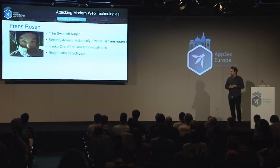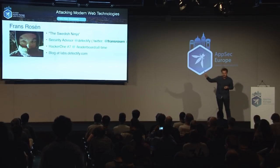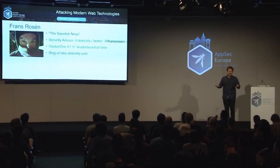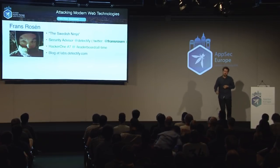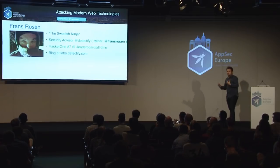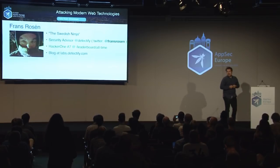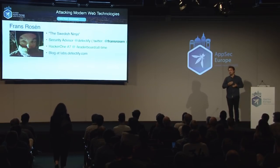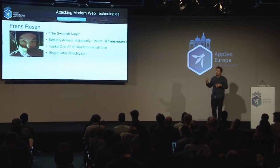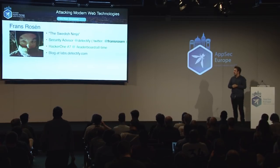My name is Franz Rosen. I try to call myself the Swedish Ninja — it's a bit of a douchebag move, but every time I show people outside of Sweden this profile pic, they say I'm dressed as a ninja. It's super cold in Sweden, that's why. I work as a security advisor at Detectify, doing automation. We have a booth, booth 17, outside this room. I do a lot of bug bounties — I use that as R&D to enhance our product. Right now I think I'm number seven, though it's a weird point system. No bad feelings, HackerOne.